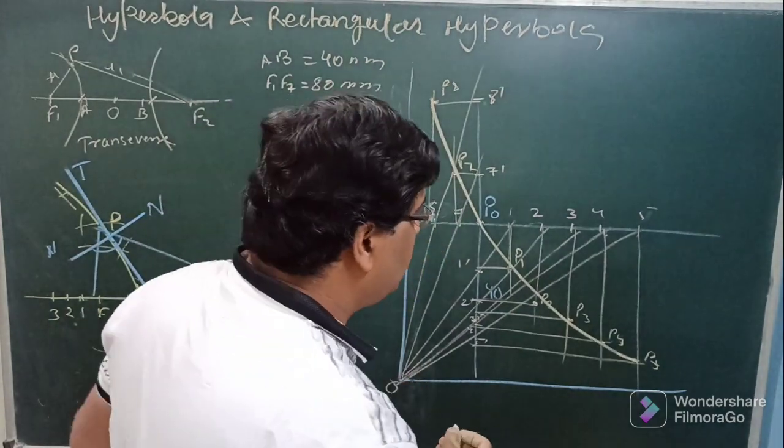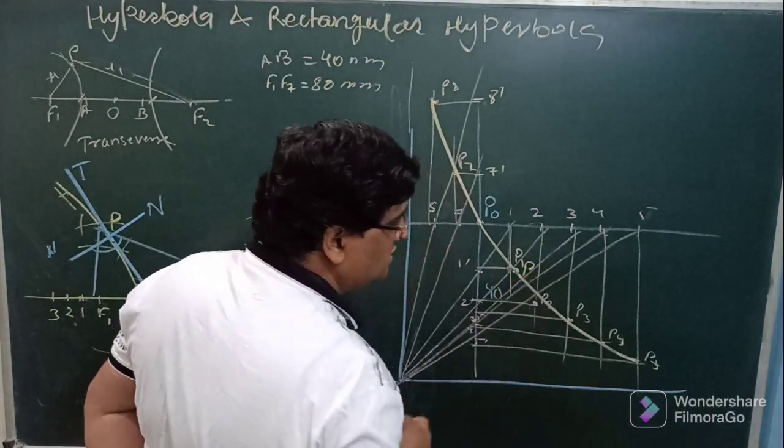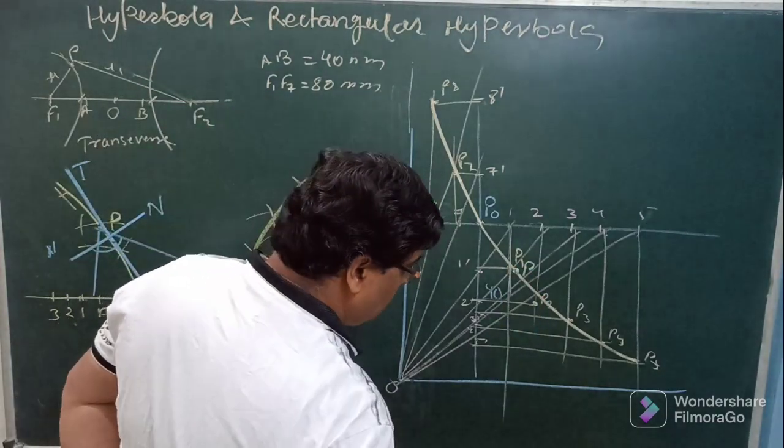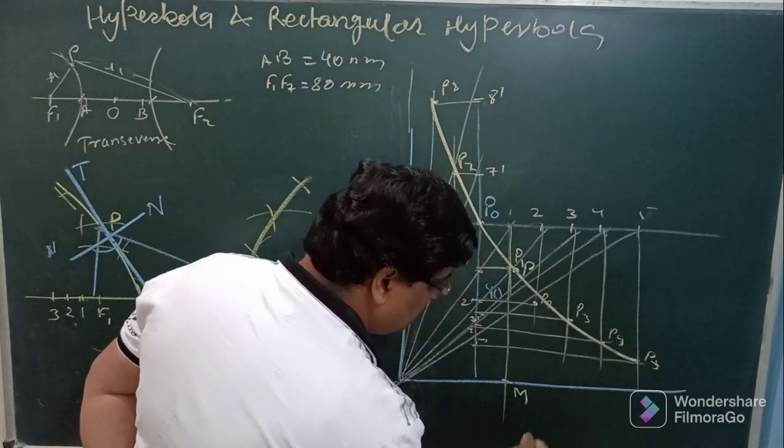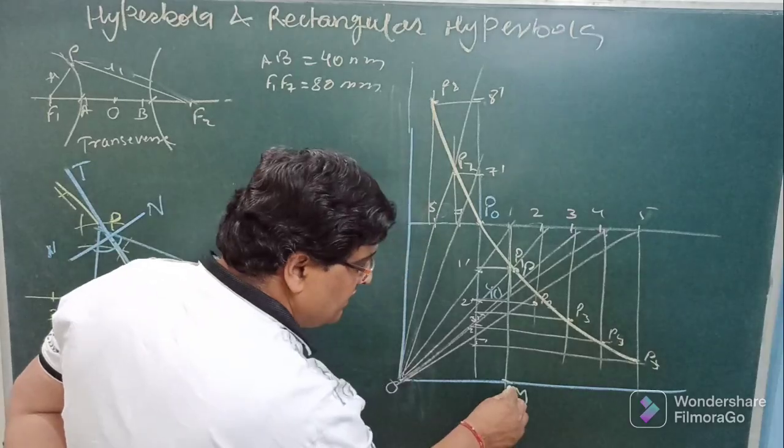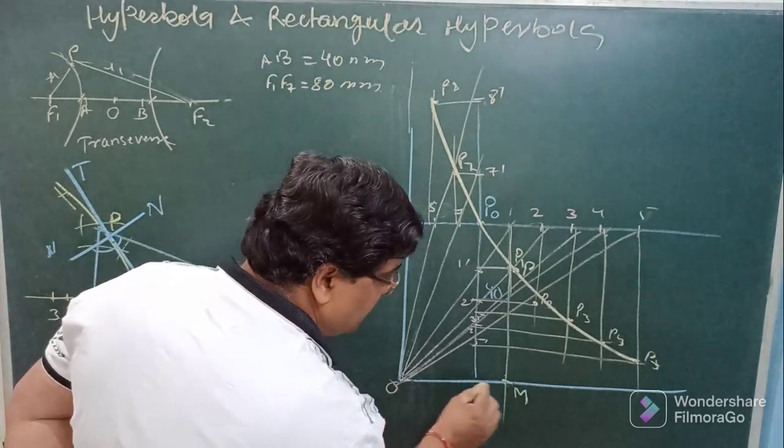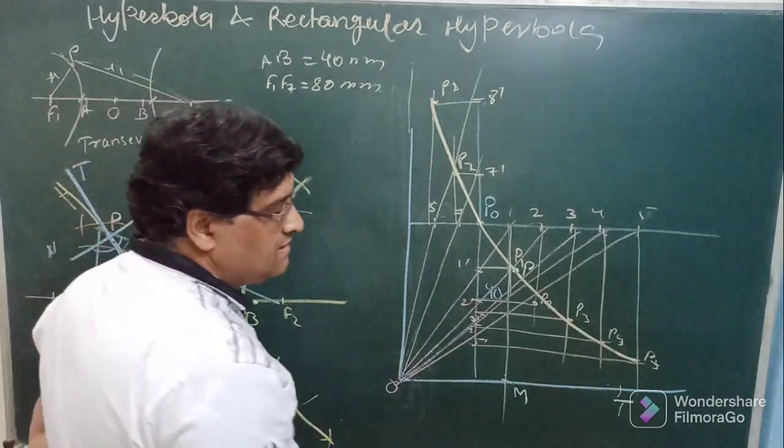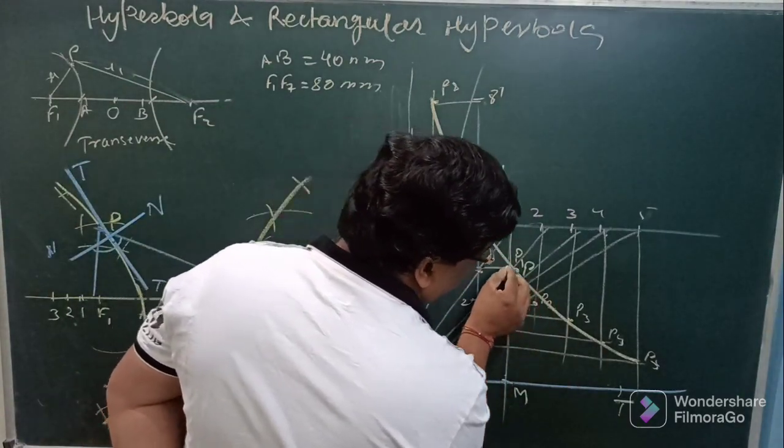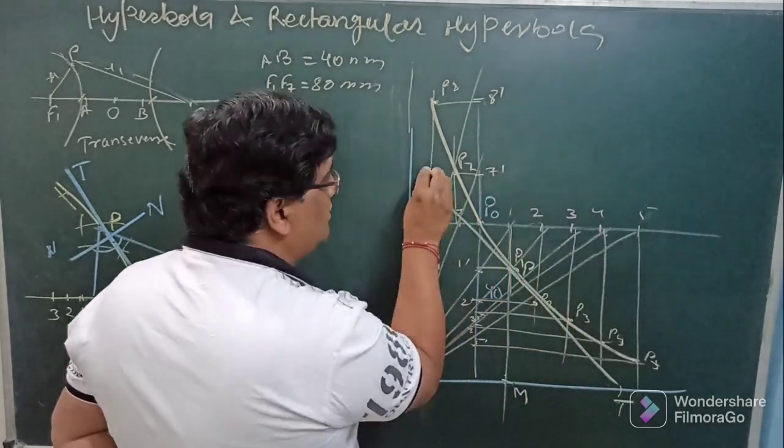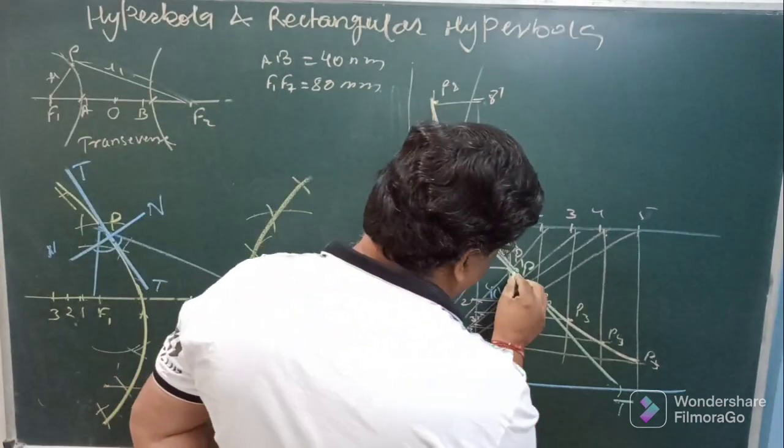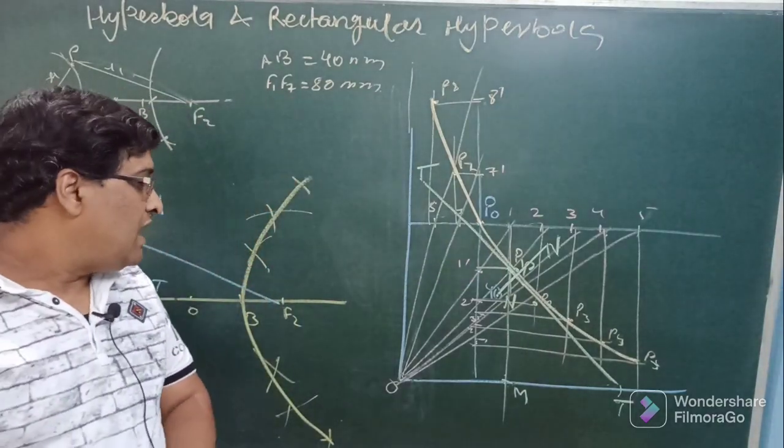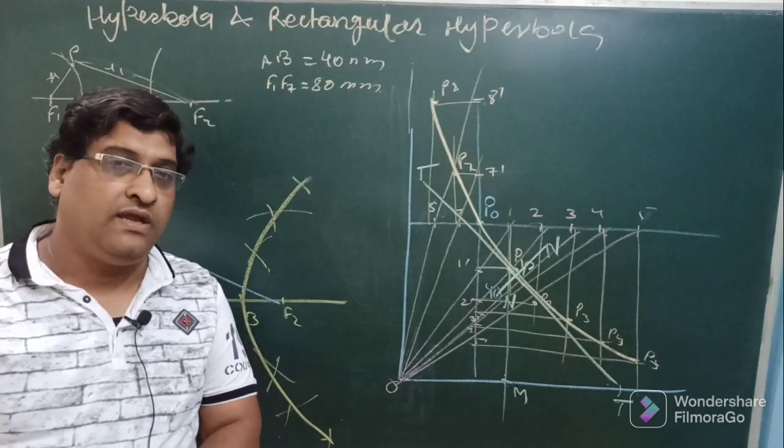To draw tangent and normal at any point of the curve, say here I wish to draw a tangent and normal. Just drop a vertical line from this point p on the horizontal axis. It will cut at point m. Now taking m as center and radius equal to mo, cut this side. Another point may be termed as capital T. Join this T with p, this will be the tangent. And a perpendicular will provide you the normal. So in this way you can draw hyperbola as well as rectangular hyperbola and their tangents and normal.